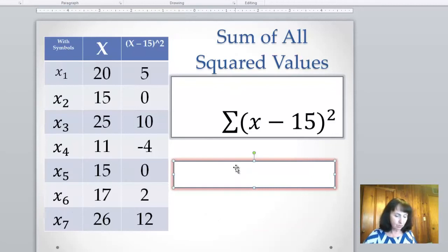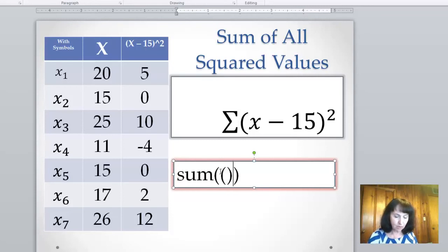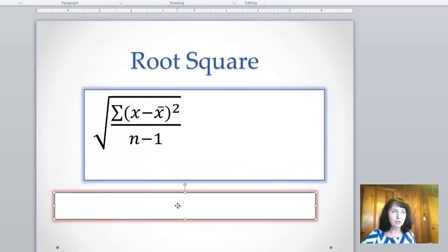And if we have sum of something squared, once again, we need to put parentheses, and then within the parentheses, quantity to the power of 2. And then this quantity is very easy, x minus 15. What about this complicated formula?